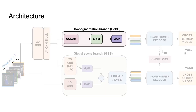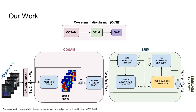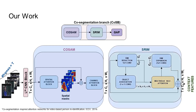Let's look at the co-segmentation branch in detail. First, the intermediate features from the 2D CNN block are fed to the co-segmentation attention module, which has a spatial and a channel attention step. It utilizes correlation cost volume between adjacent frame features to capture common salient objects and suppress noise features. Next, the output features from the CoSAM module are passed through a salient regions interaction module consisting of an object association layer followed by a self-attention block to promote interaction between salient regions.